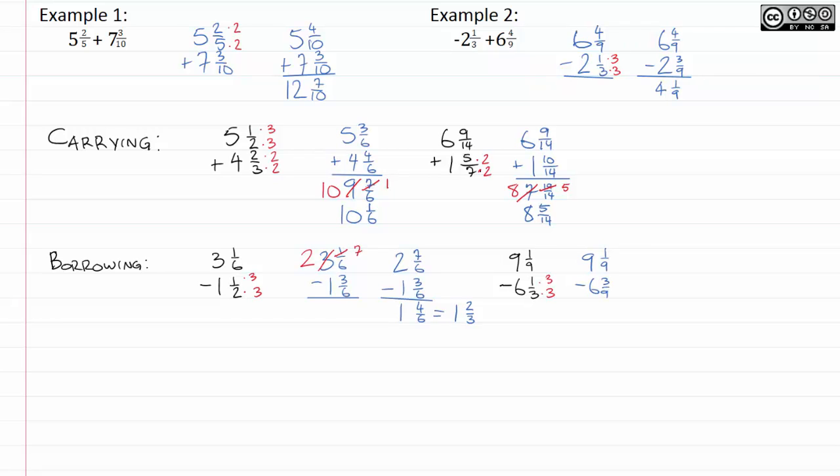Again, we have too many ninths here. So, I'm going to borrow. I'll subtract 1 here and add the denominator and get 10 here. We will now have 8 and 10 ninths. And from that, we will subtract 6 and 3 ninths. Well, 8 minus 6 is 2, 10 minus 3 is 7, and we get 2 and 7 ninths. And there you go.